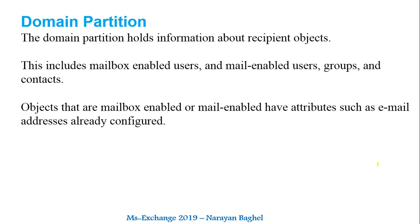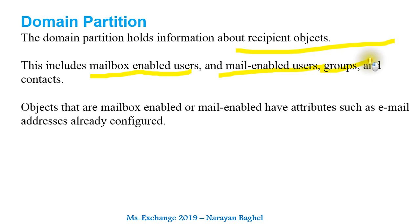The domain partition holds information about recipient objects — who is going to receive mail. This includes mailbox-enabled users, mail-enabled users, groups, and contacts. Objects that are mail-enabled already have attributes such as email address configured, and this kind of information is contained in the domain partition.